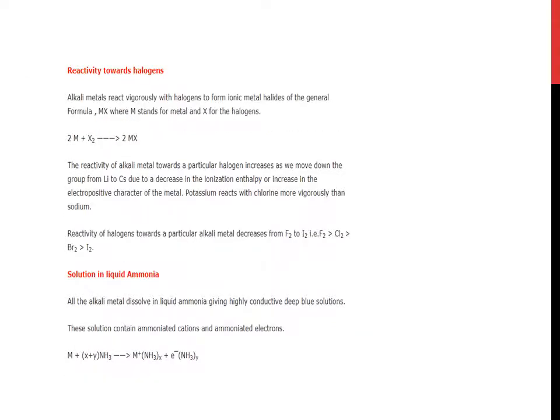Reactivity towards halogens. Alkali metals react vigorously with halogens to form ionic metal halides of the general formula MX, where X stands for halogens. The reactivity of alkali metals towards a particular halogen increases as we move down the group from lithium to cesium.